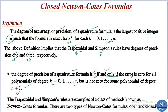If the degree of precision of a quadrature formula is n, then the error is 0 for all polynomials of degree less than or equal to n, but it is non-zero for some polynomials of degree n+1. Also, if the error is 0 for all polynomials of degree less than or equal to n but non-zero for some polynomial of degree n+1, then we know the precision is n.